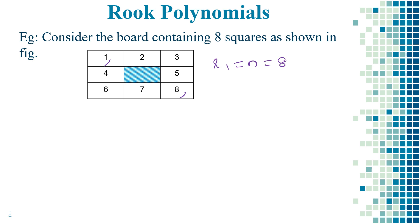Next let's calculate R2 value. R2 can be calculated for the placement of the two pans. We should keep in mind the two pans cannot be placed in the same row and same column so that they can capture each other.